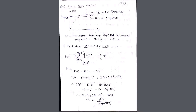Let us derive the formula for steady state error using this block diagram. You have R(s) as the reference input signal, E(s) = R(s) − B(s) as the error response, G(s) as the forward transfer function, C(s) as the output response, and H(s) as the negative feedback. Now: E(s) = R(s) − B(s), C(s) = E(s)·G(s), and B(s) = C(s)·H(s).